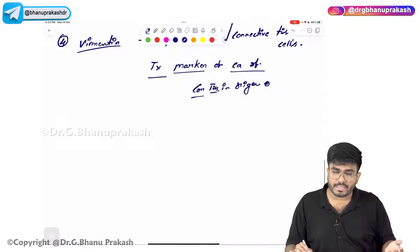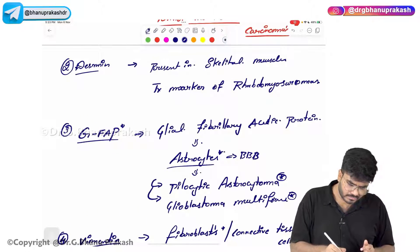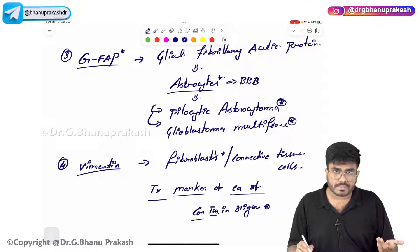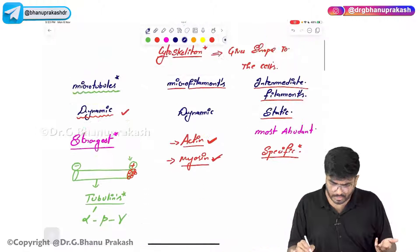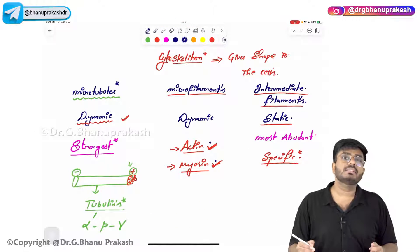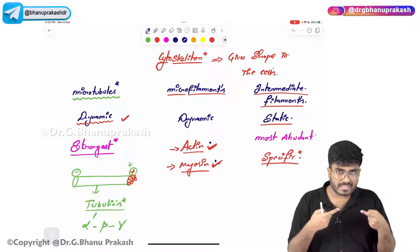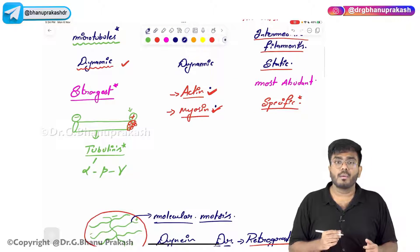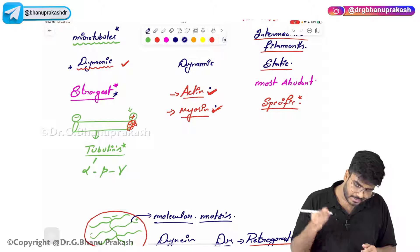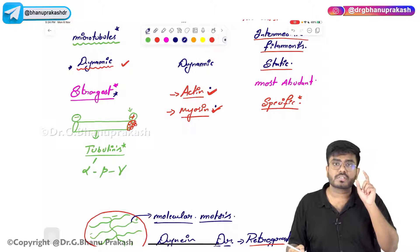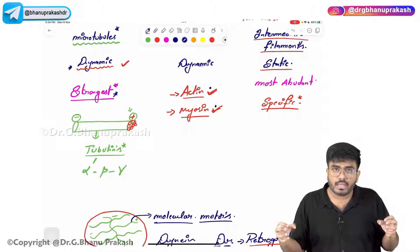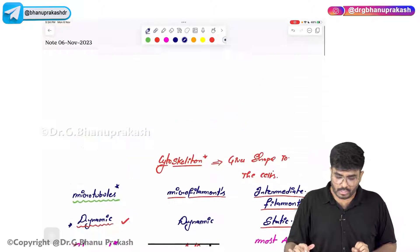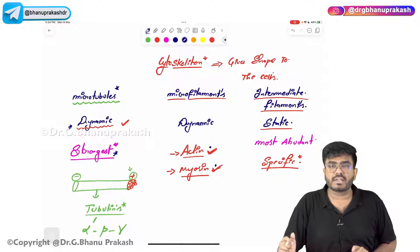Intermediate filaments are more abundant in number and are specific to different types of cells. The important ones are Keratin, Desmin, GFAP, and Vimentin. Microfilaments — actin and myosin — are present in all cells and give structural integrity. Microtubules are the strongest and dynamic, involved in cell shape, cell division, and intracellular transport via anterograde and retrograde cargo. That completes our topic of cytoskeleton.